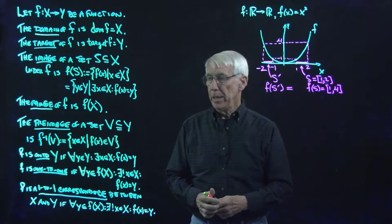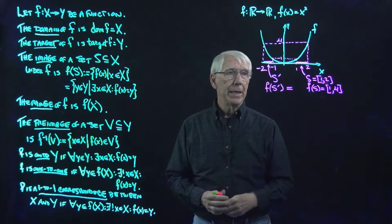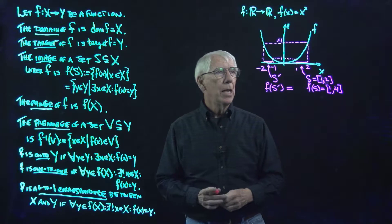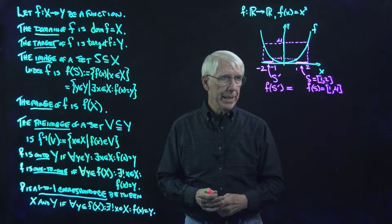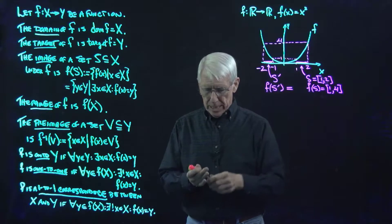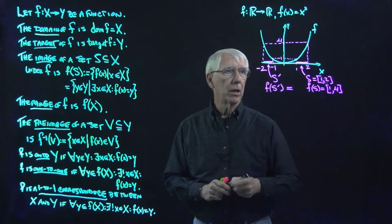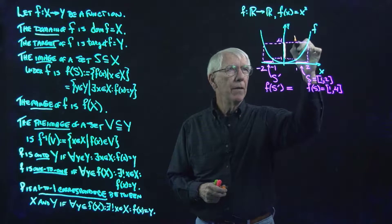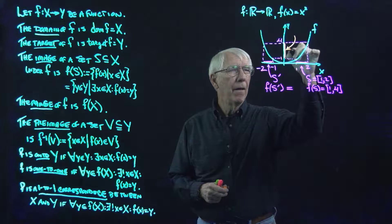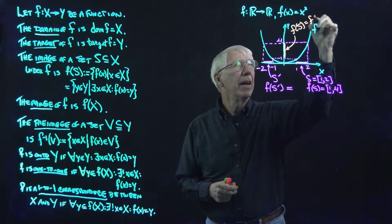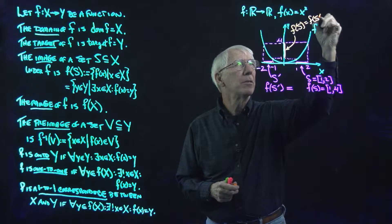But let's also notice that if this goes across to here, then this is minus 1, and this goes across to here, this is minus 2. So let's say this is the set S prime, and so we have f of S prime is equal to f of S, which is the interval from 1 to 4.